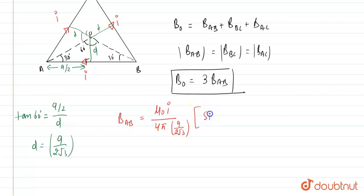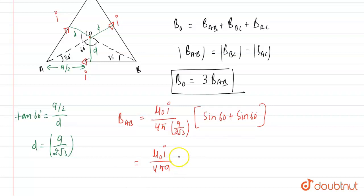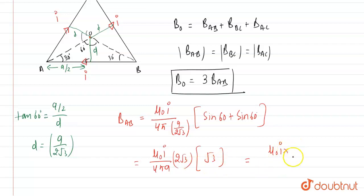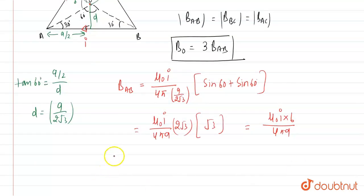Now substituting into the formula: B_AB = μ₀I / (4π × a/(2√3)) × (sin 60° + sin 60°) = μ₀I / (4π × a/(2√3)) × (√3/2 + √3/2) = μ₀I / (4π × a/(2√3)) × √3. Simplifying, B_AB = 3μ₀I / (2πa).